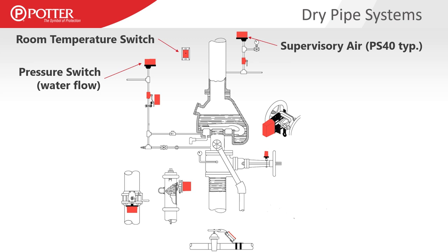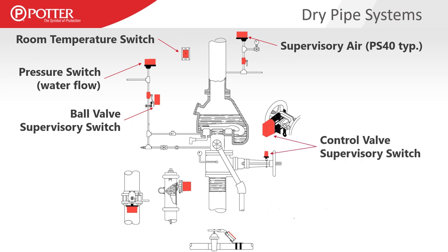Room temperature switches monitor room temperature, which is critical in a dry pipe valve enclosure. The pressure switch for water flow operates similarly, along with ball valve supervisory switches that are important again to prevent that ball valve from being inadvertently left closed — thereby eliminating the value of the pressure type flow switch on that side of the dry pipe valve. We have more control valve supervisory switches, just like on the wet pipe system, and they can be in several different configurations.